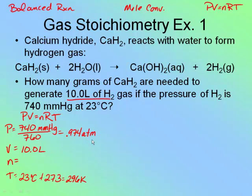Notice that the only piece of information from PV = NRT that we're missing is moles. The question asks for grams of calcium hydride, but it gives information in terms of hydrogen. So I'm going to solve for moles of hydrogen first, then use stoichiometry to find the grams of calcium hydride. Since I have all the other information, I'll use PV = NRT first.